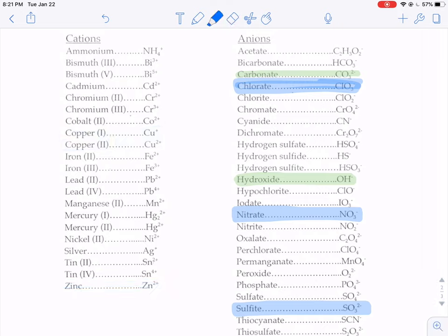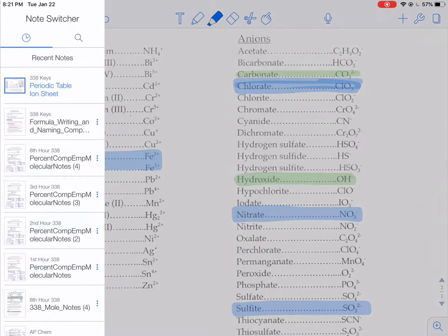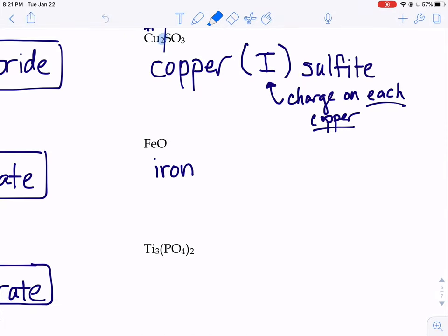When you look at your chart sheet here, your iron, well, you could have the plus 2 kind of iron or the plus 3 kind of iron. There's multiple kinds. We have to figure out what kind it is. So it'll need a Roman numeral. But what is the Roman numeral?